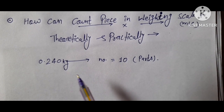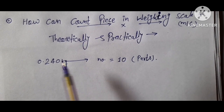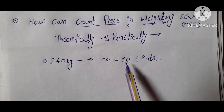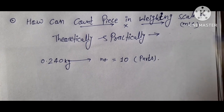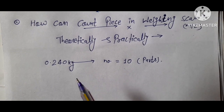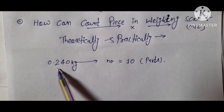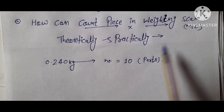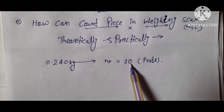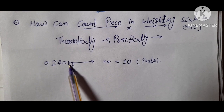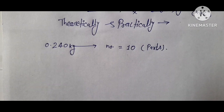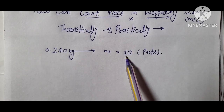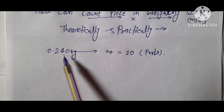Here I am calculating practically the number of parts being put on the weighing scale. If we are putting 10 parts on a weighing machine, the value shown is 0.240 kg. So if I am putting 10 parts on the weighing machine, then those 10 parts will have a weight of 0.24 kg. If I am putting 10 parts on the weighing machine, their mass will be counted as 0.24 kg.